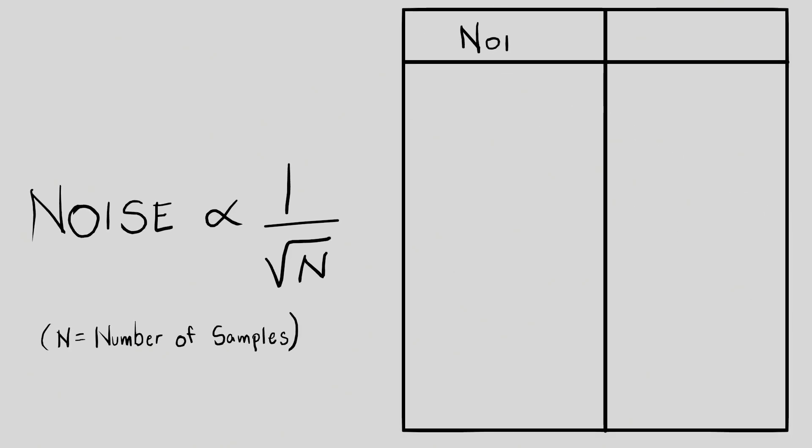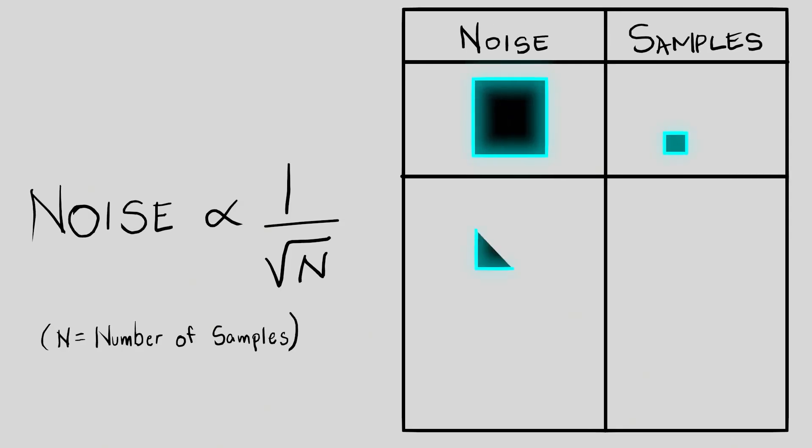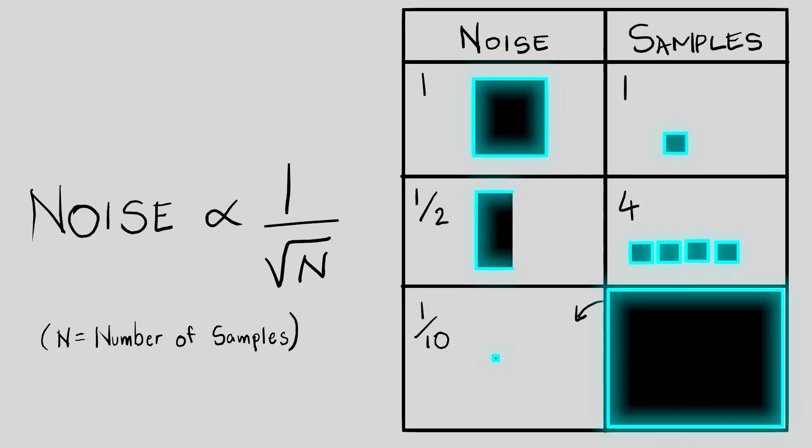The relationship is predictable. It's proportional to 1 over the square root of the number of samples. If you want to half the noise, you need 4 times the samples. If you want the noise to reduce by a factor of 10, you need 100 times more samples.